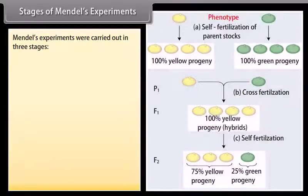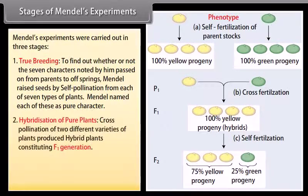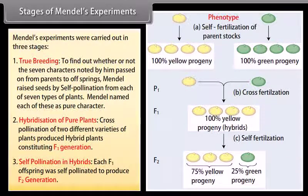Stages of Mendel's Experiments. Mendel's experiments were carried out in three stages. True breeding: To find out whether or not the seven characters noted by him passed on from parents to offspring, Mendel raised seeds by self-pollination from each of seven types of plants. Mendel named each of these as pure character. Hybridization of pure plants: Cross-pollination of two different varieties of plants produced hybrid plants, constituting F1 generation. Self-pollination in hybrids: Each F1 offspring was self-pollinated to produce F2 generation.